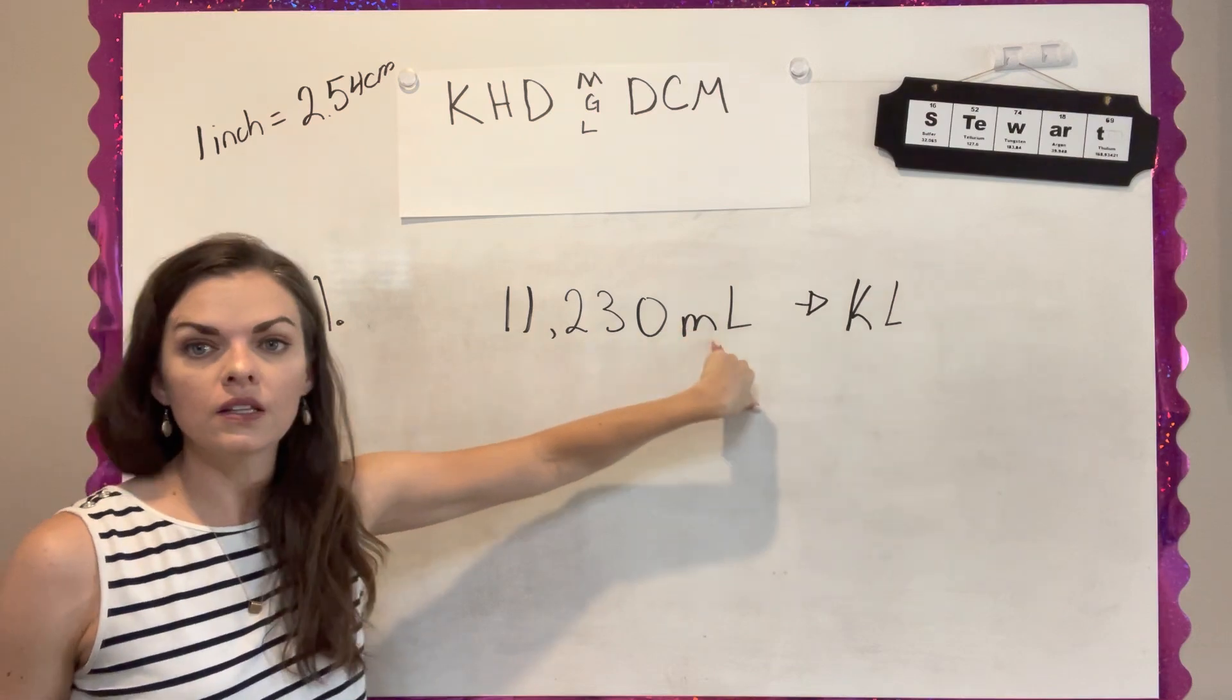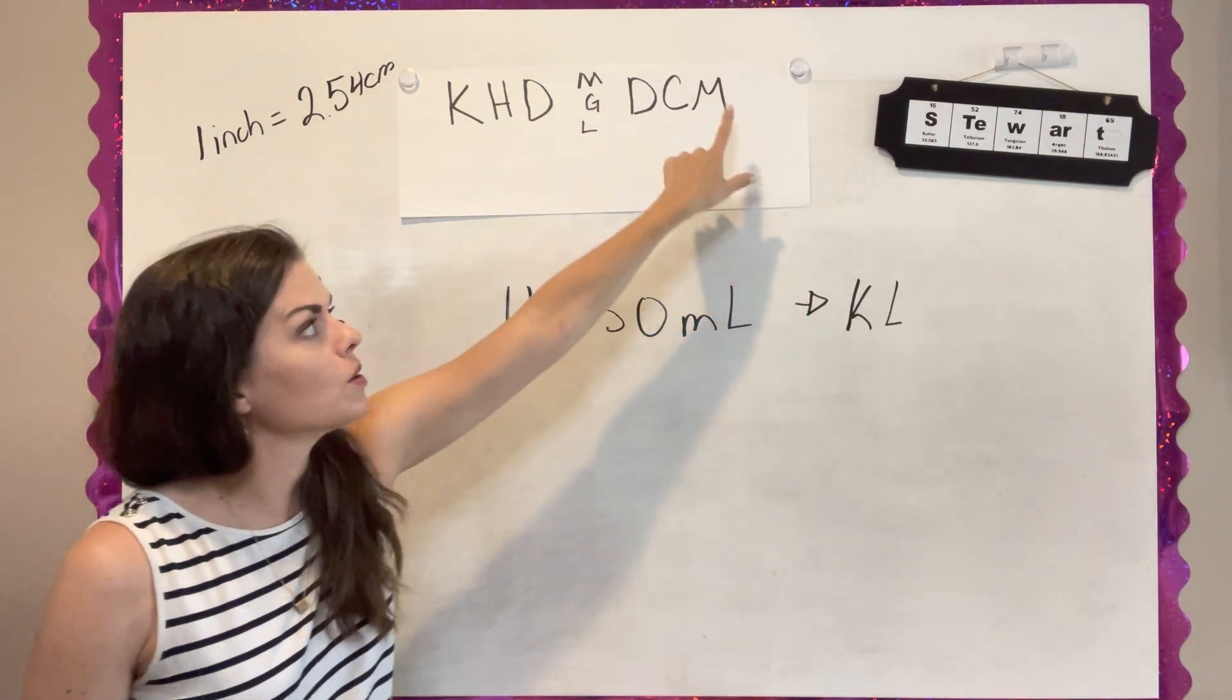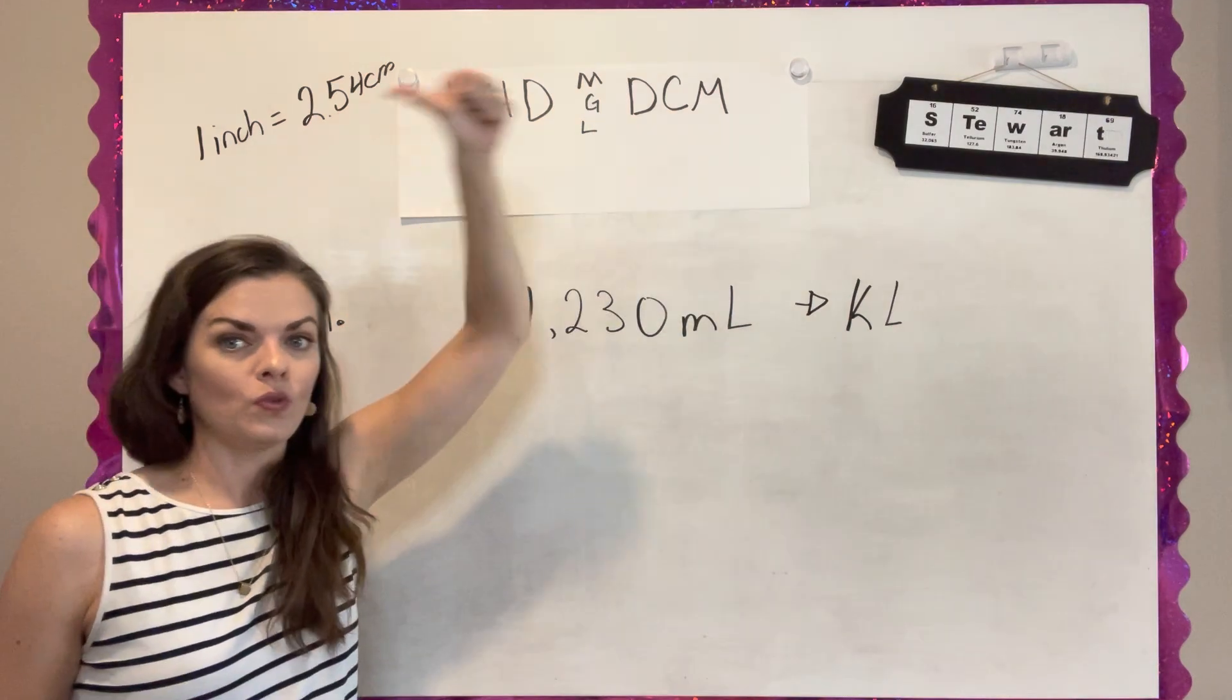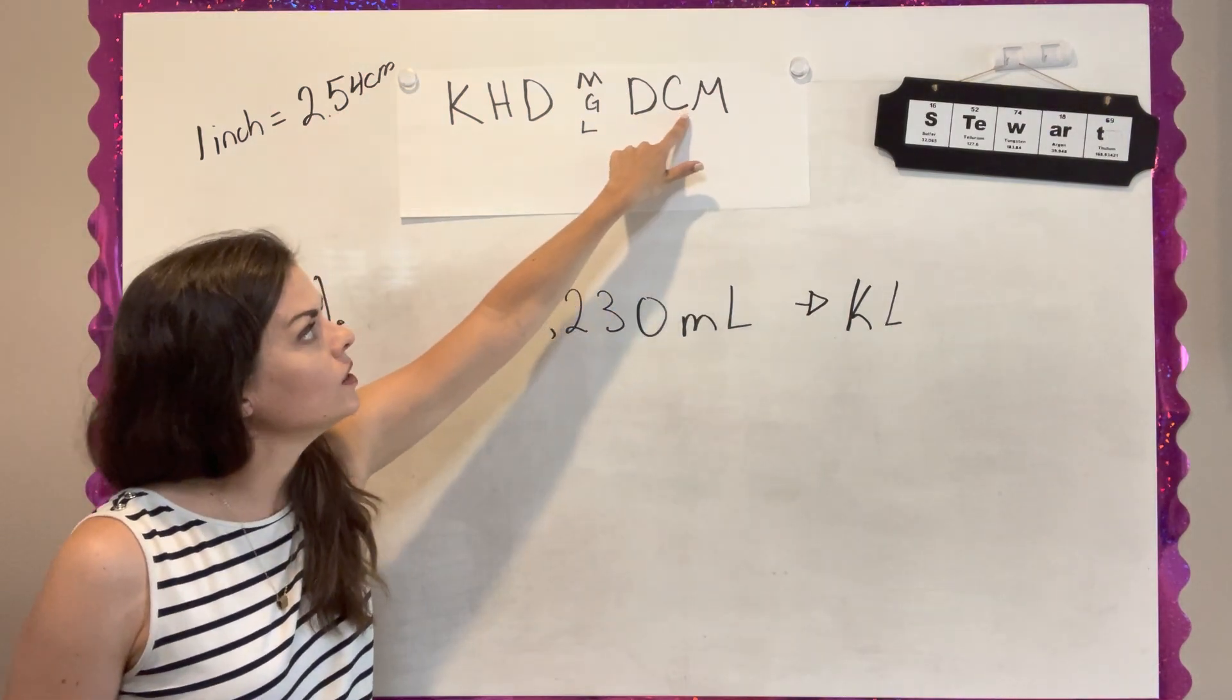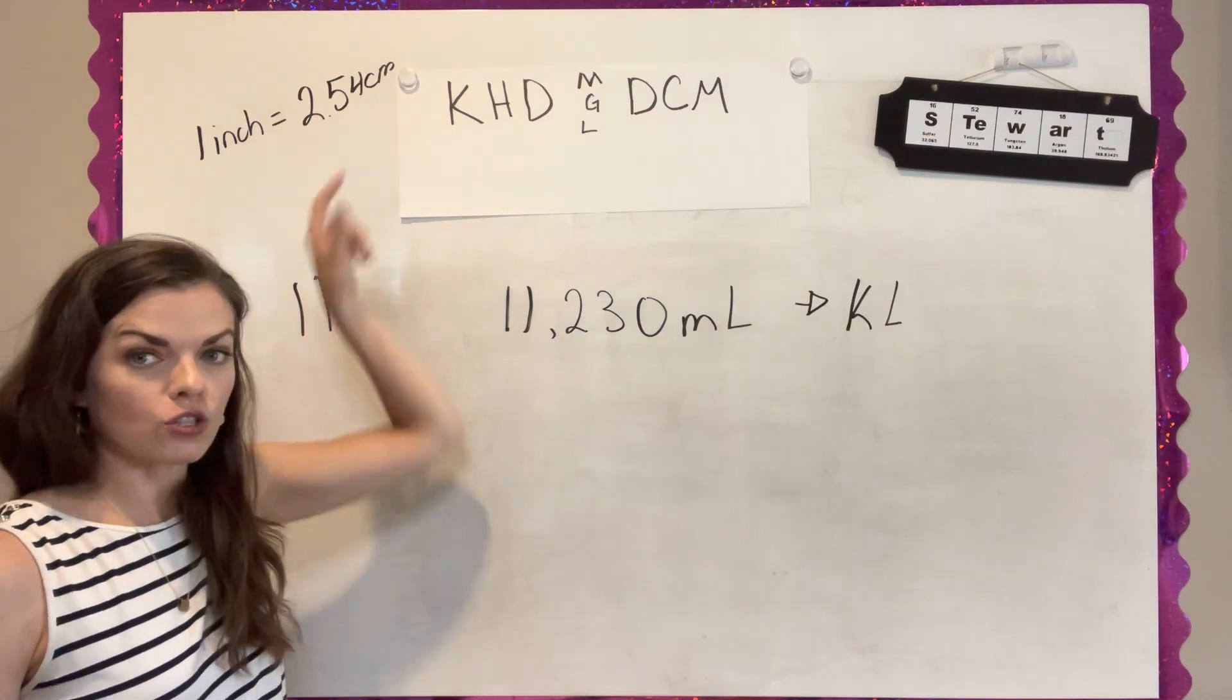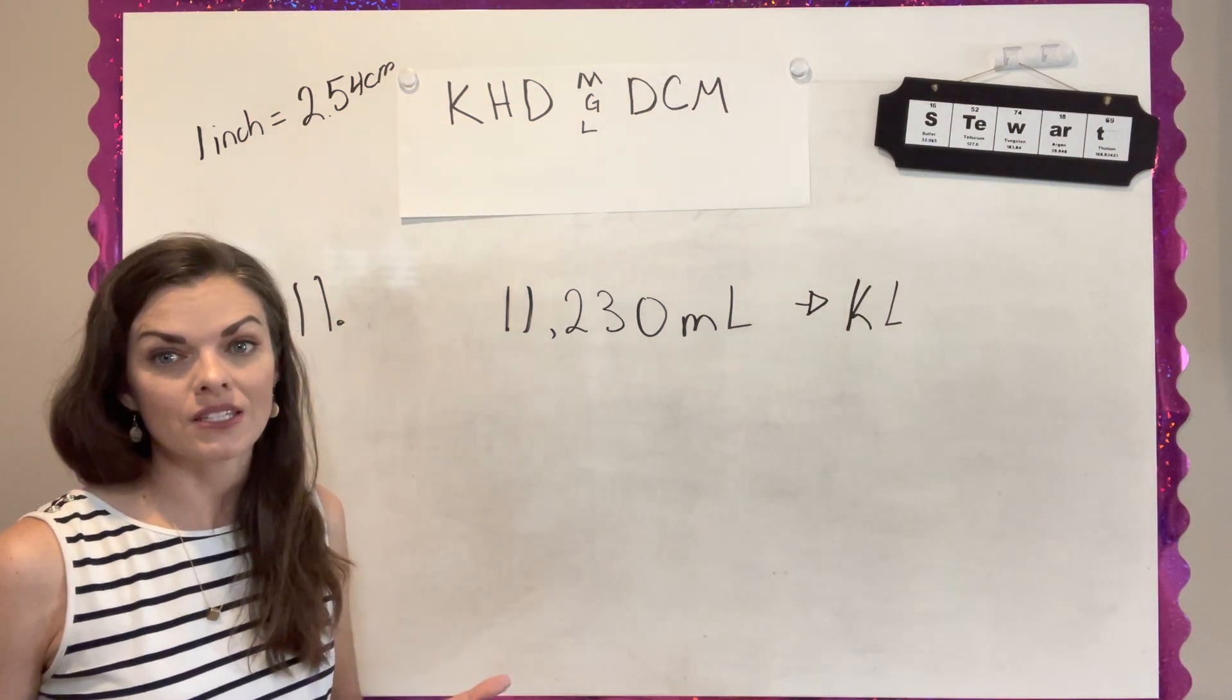We're going from milliliters to kiloliters. So this time we're going from down here in the milli all the way over to the K. We're moving to the left. So 1, 2, 3, 4, 5, 6. So you're going to be moving your decimals six places to the left.